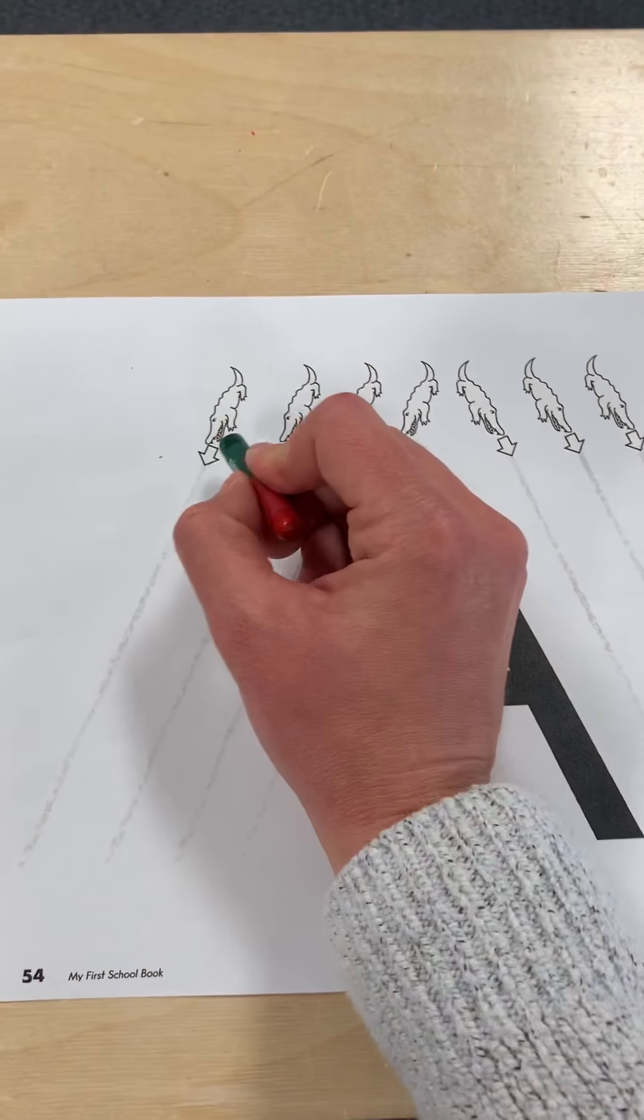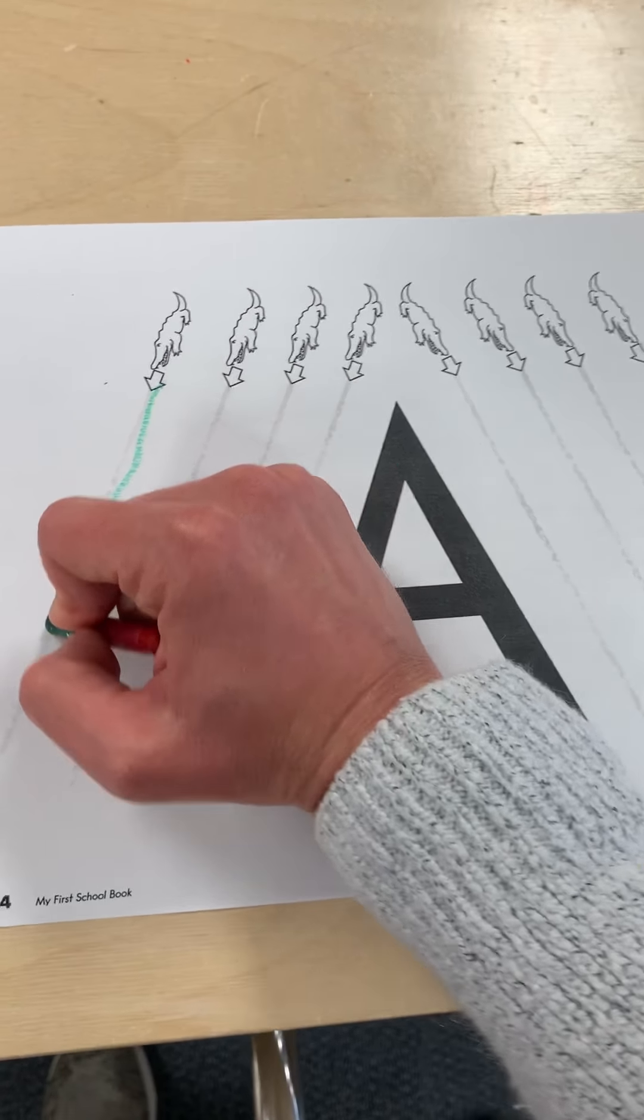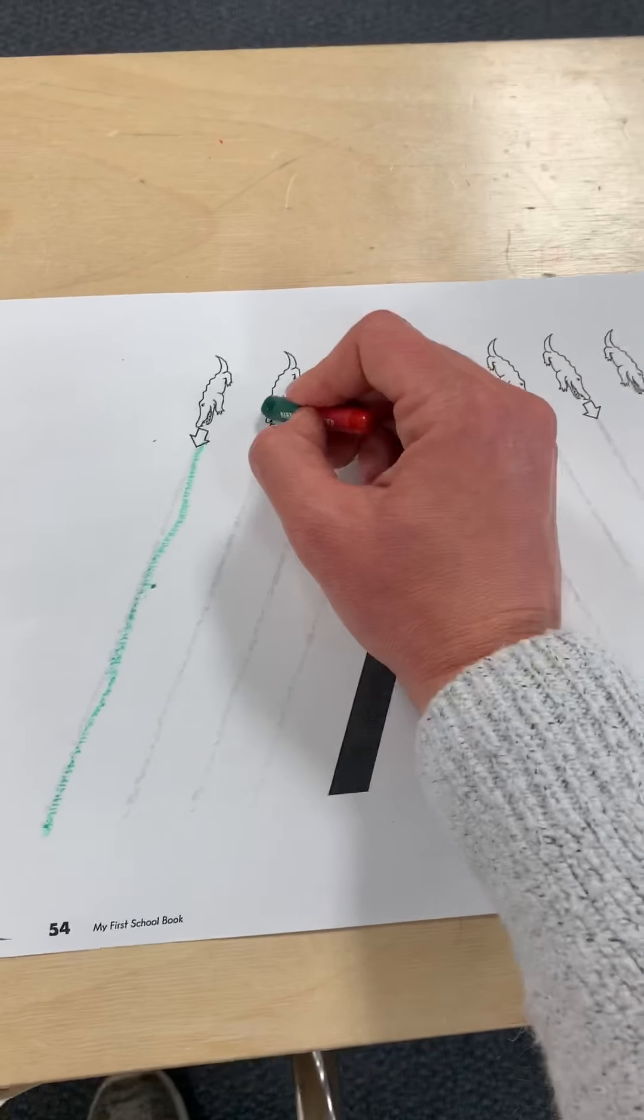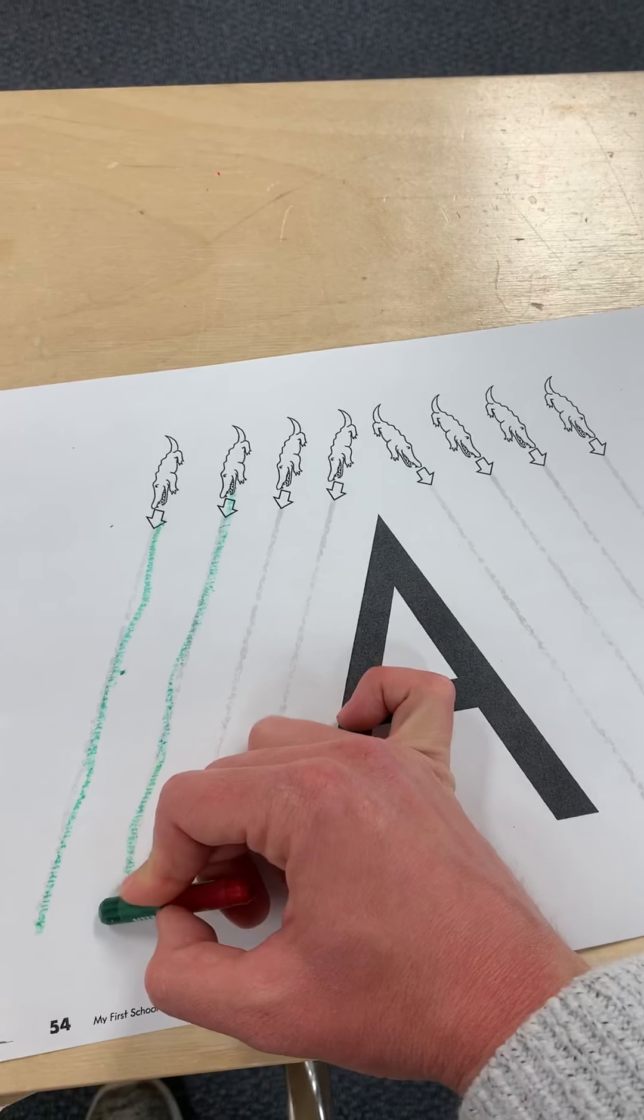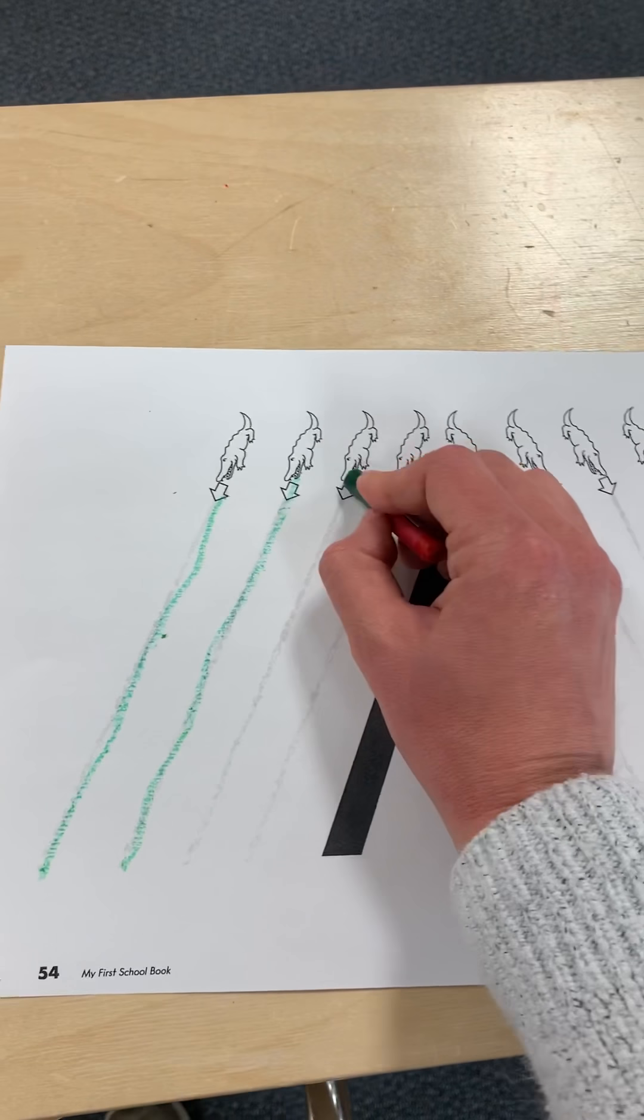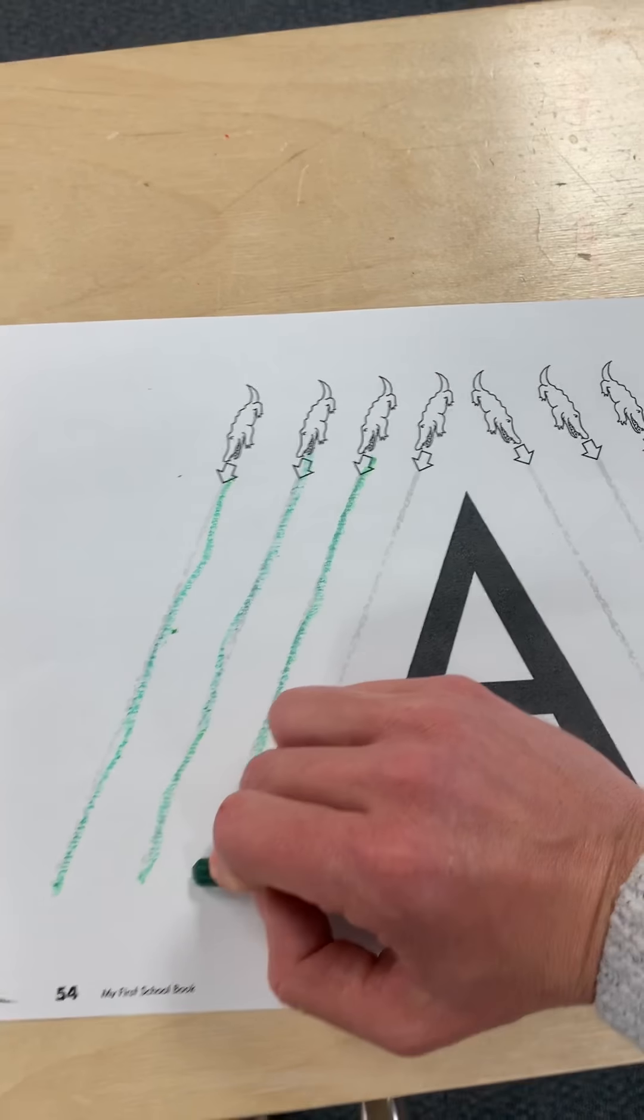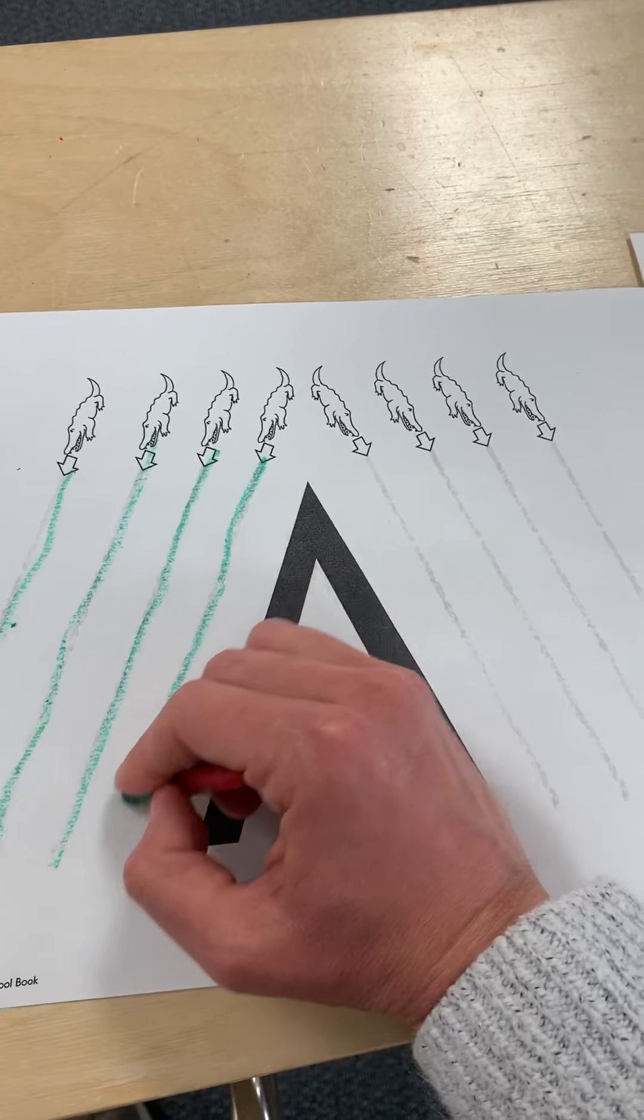So we're gonna start at the alligator and go big line down. Then we go to the next alligator, big line down. Go to the next alligator, big line down. Next one, big line down.